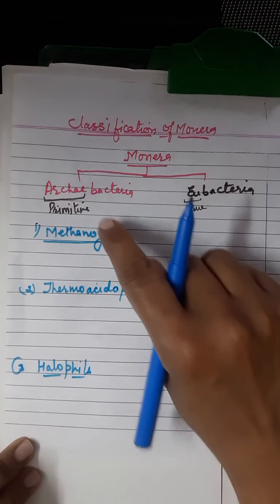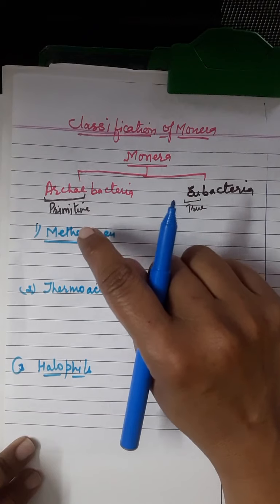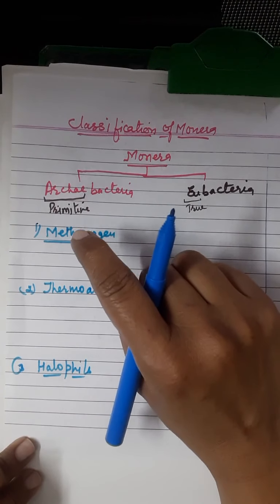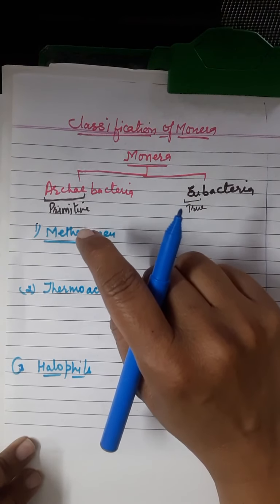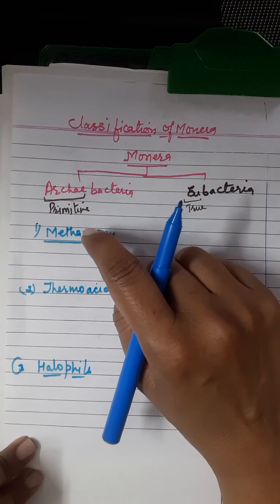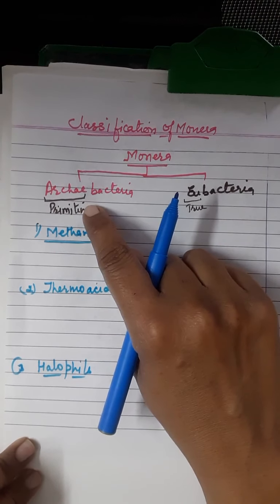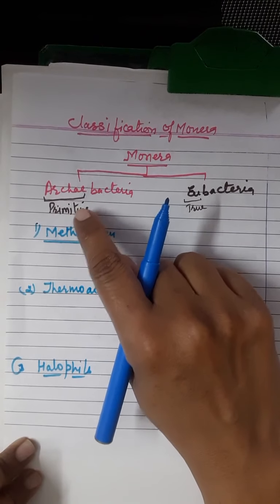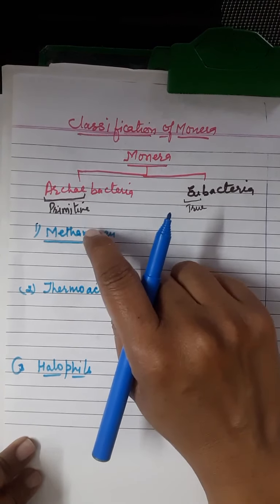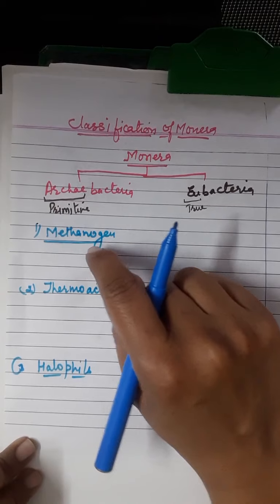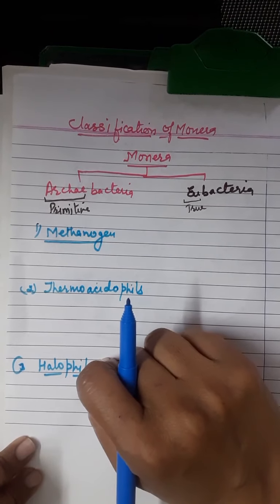Archibacteria are present in every type of harsh or extreme climatic condition — they can survive there. Why they survive in those extreme conditions will be discussed later, but first let's see where each different type of Archibacteria is found.